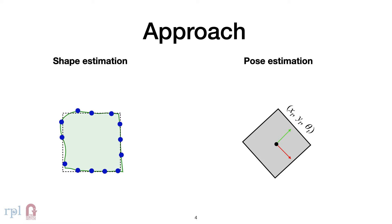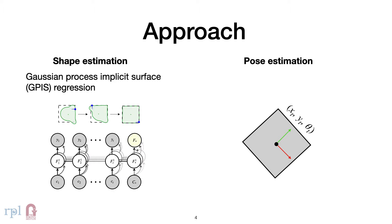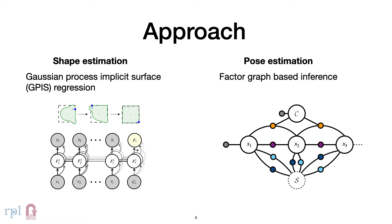Our approach alternates between mapping and localization steps. We combine a Gaussian process implicit surface with a factor graph-based optimization.